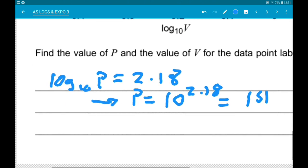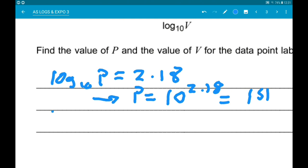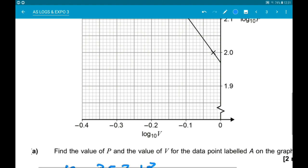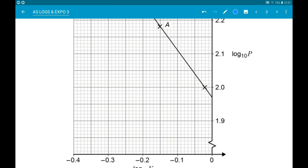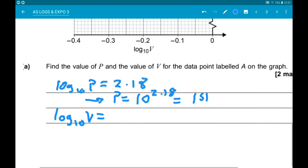Now we need to find log10 of V. So that is going along the bottom and that is going to be minus 0.15. So that tells us V is 10 to the minus 0.15, which is 0.708.